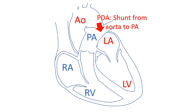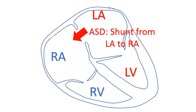In PDA, blood flows from the aorta at systemic pressure to the pulmonary artery, which has a much lower pressure after birth. When there is an atrial septal defect, there is a left-to-right shunt from the left atrium to the right atrium. The excessive load causes dilatation of the right atrium, right ventricle, and pulmonary artery.